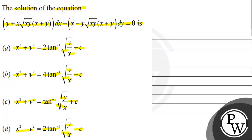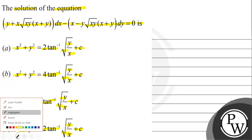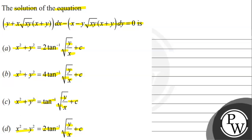This question is a differential equation: (y + x√(xy)(x+y))dx − (x − y√(xy)(x+y))dy = 0. We need to find its solution. It is a very simple question. First, let's see the key concepts.